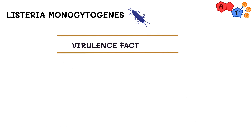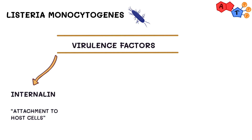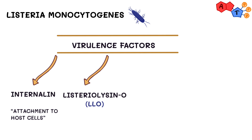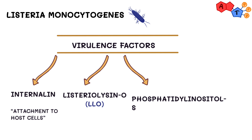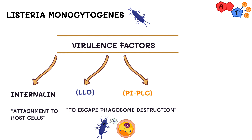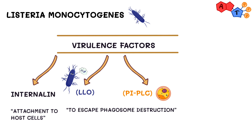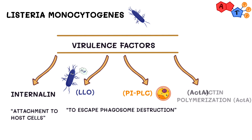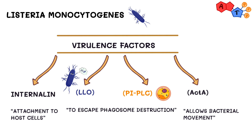There are primarily four important virulence factors that enable the bacteria to become pathogenic. The first one is called internalin, which is a bacterial surface protein that facilitates its attachment to host cells. The second and third are Listeriolysin O and Phosphatidylinositol-specific Phospholipase C — both help the bacteria to escape from the phagosome into the cytoplasm, thereby escaping destruction. And finally, actin polymerization, which allows the bacteria to move within and between cells.